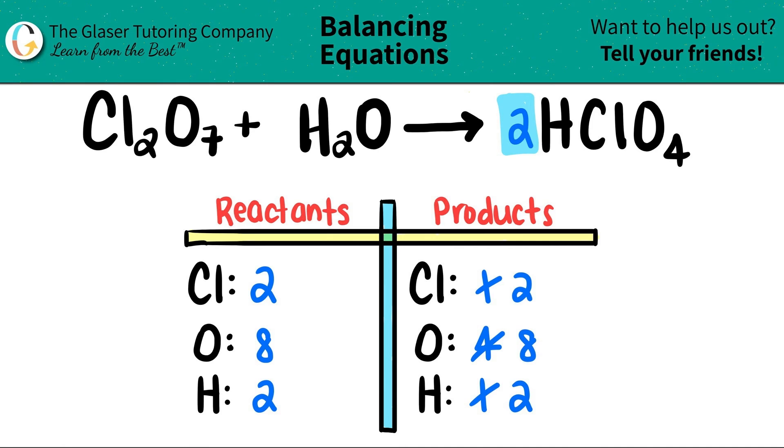But look at that. 2 chlorines on both sides, 8 oxygens on both sides, and 2 hydrogens. This is balanced. So this is my balanced equation. I have 1 Cl2O7 plus 1 H2O, which will come together and make 2 HClO4s. That's it, guys.